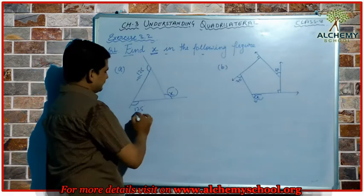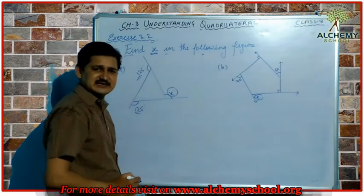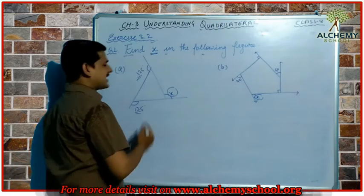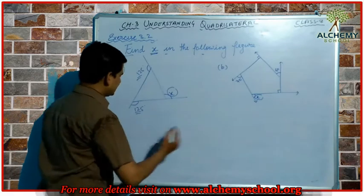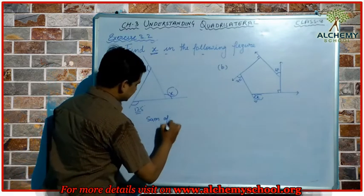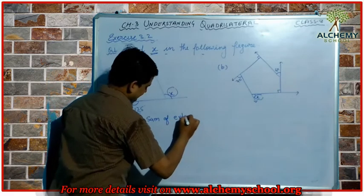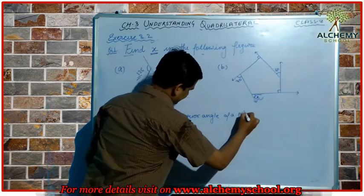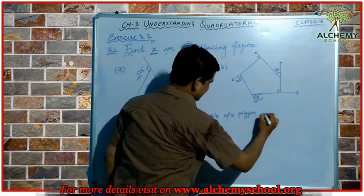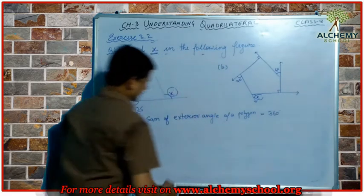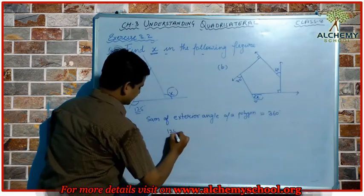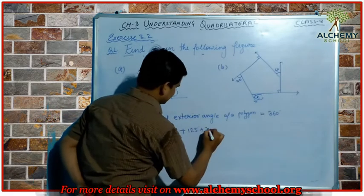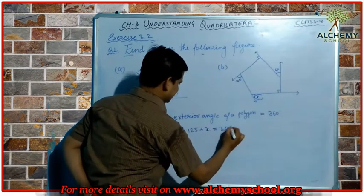When we observe these angles, we find that they are the exterior angles of this polygon. As we discussed, the sum of exterior angles of a polygon is always 360 degrees. So we can write: sum of exterior angles = 360 degrees. We add 125° + 125° + x = 360°.